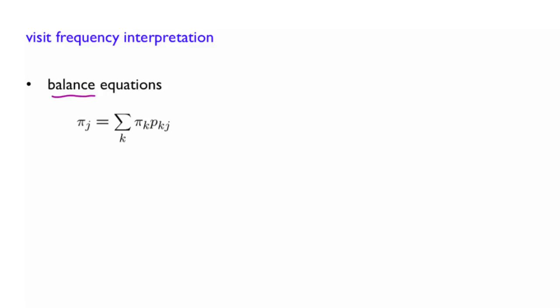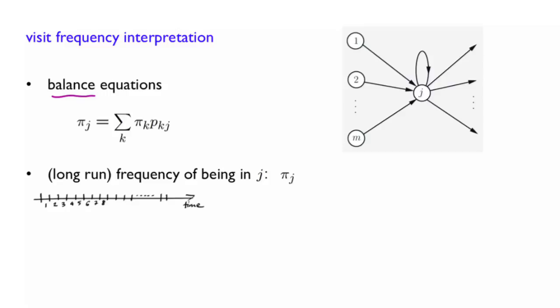Intuitively, we can sometimes think of probabilities as frequencies. For example, if we keep tossing a fair coin, which has a probability half of heads, then in the long run, half of the time, we are going to see heads. So let us try an interpretation of this kind for pi of j, the steady state probability of state j.